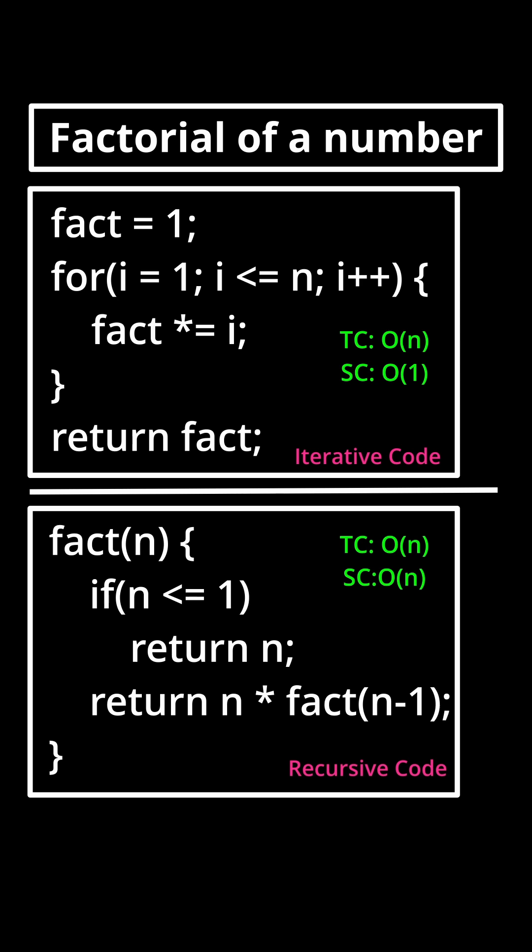Every recursive code can be transformed into iterative code and vice versa. But we can see that every iterative code takes constant space O(1), whereas recursive code takes some space - either logarithmic, linear, or exponential.